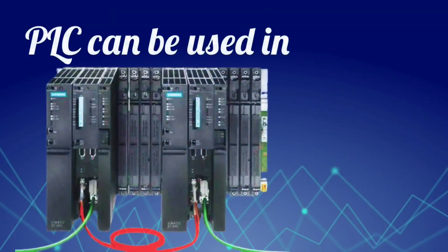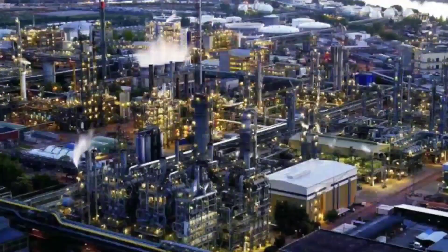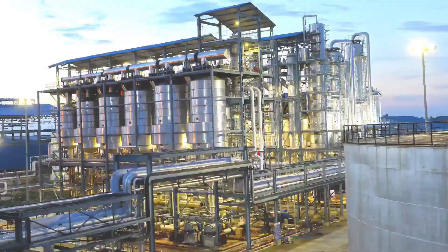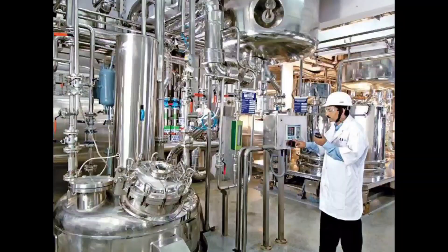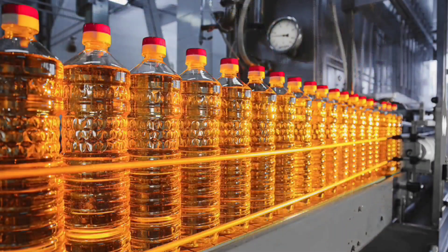Let me explain it in simple language. PLCs are used in almost all industries, like power plant, sugar mill, chemicals, pharmaceutical, paper industry, food processing, and many more.